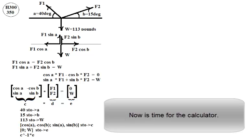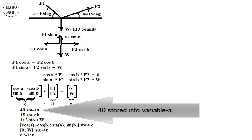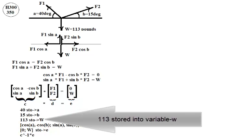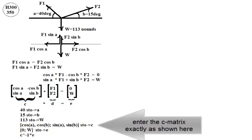Now it's time for the calculator. 40 stored into variable A, 15 is stored into variable B, 113 is stored into variable W. And then we will name it C. Enter the C matrix exactly as shown here.